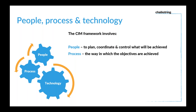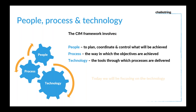The process is the way in which we achieve these objectives — defining processes is a very important part. It's all well and good having the people and a bit of software, but how do you want to use it for your business? And technology is about what tools you use to deliver CIM. For today's purposes, we'll be focusing on the technology aspect, but it's one part of three — you need the people, the processes, and the technology.